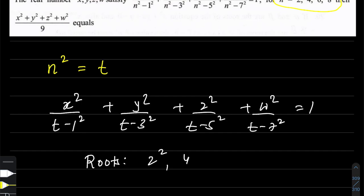We can say this equation has roots 2², 4², 6², and 8². Because we have n² equal to t, and n values can be 2, 4, 6, and 8. So the equation will satisfy for these values which are the squares of these numbers.